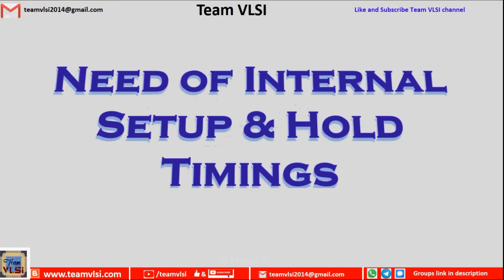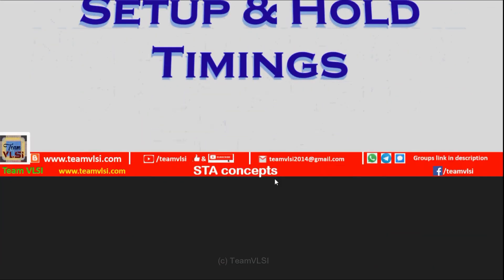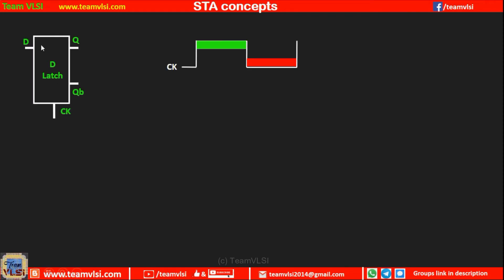After this brief introduction, let us move to the main topic: why setup and hold time is required inside a latch. Our positive level D-latch is transparent when the clock is high and goes opaque when the clock is low. The falling clock edge is called the latching edge, and at the latching edge we have to check setup and hold timing.